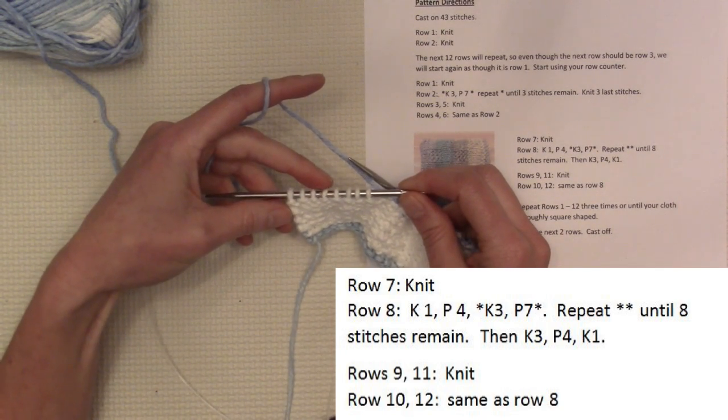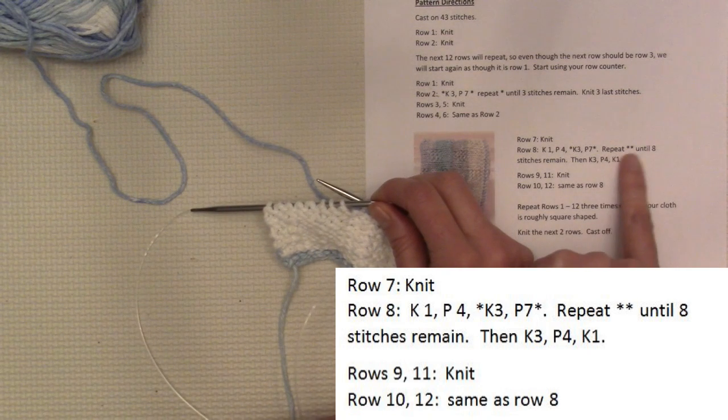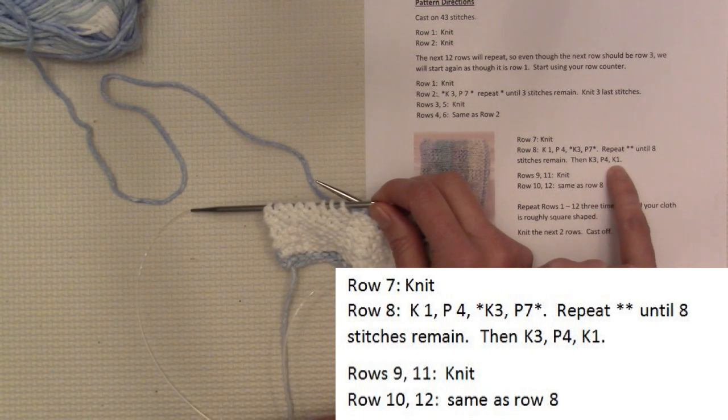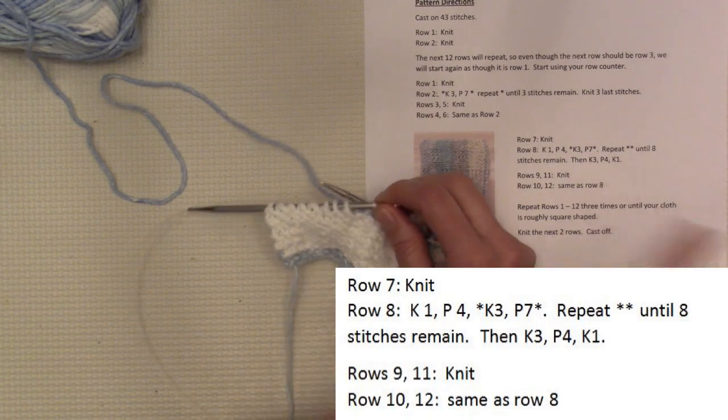See, there's my 8 stitches that are left. So when there's 8 stitches left, then you do knit 3, purl 4, knit 1. Knit 3, purl 4, knit 1.